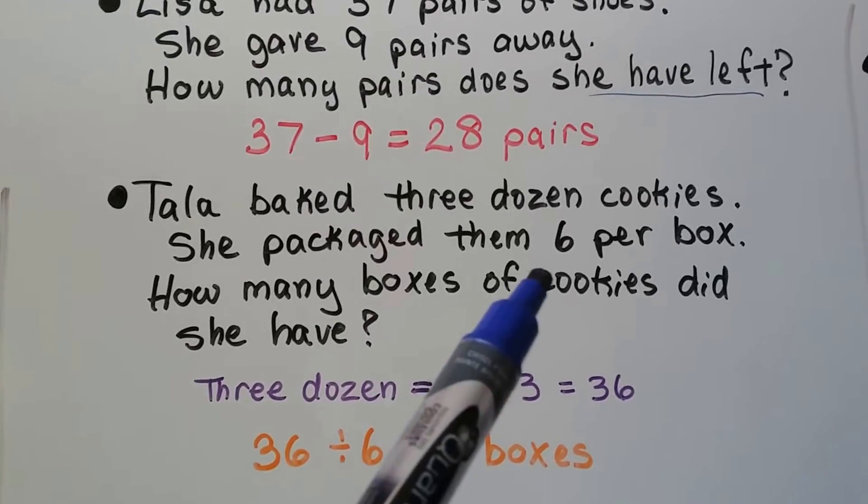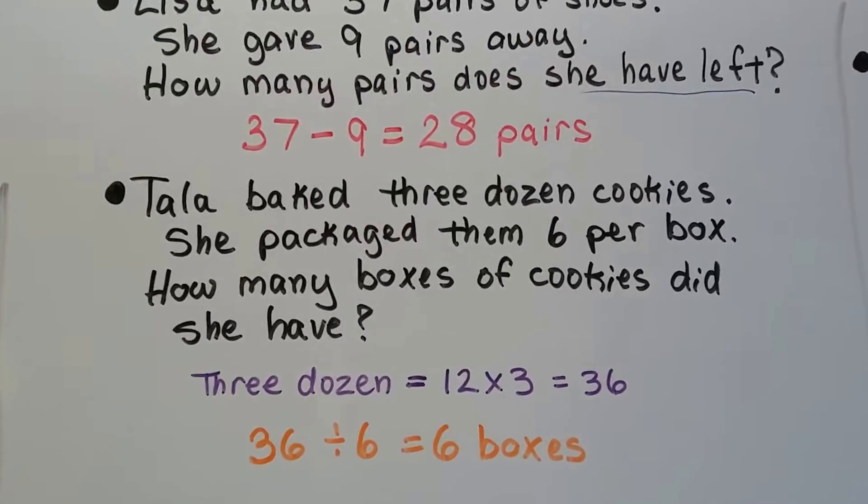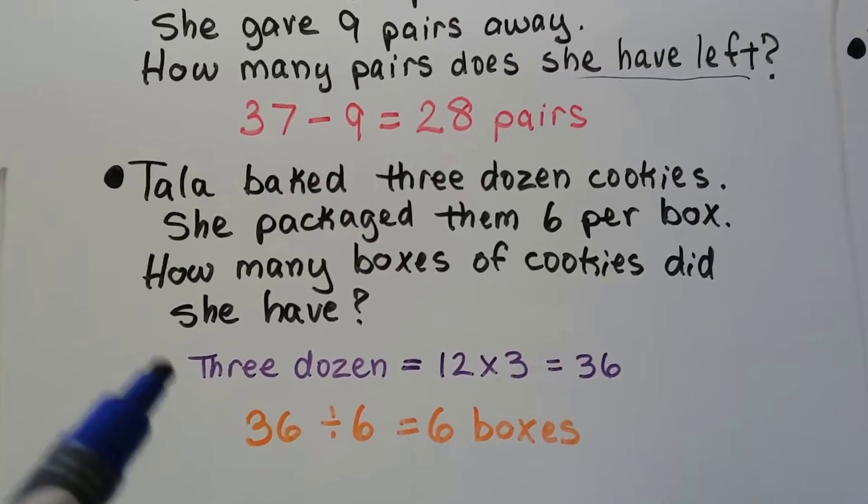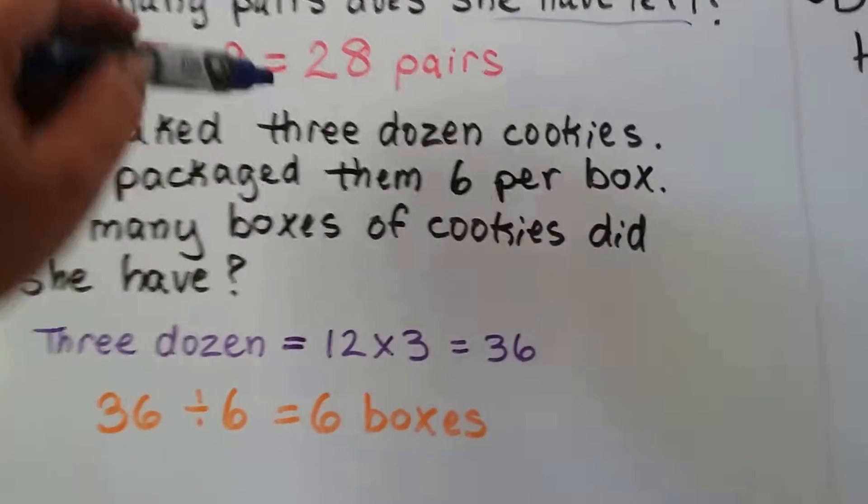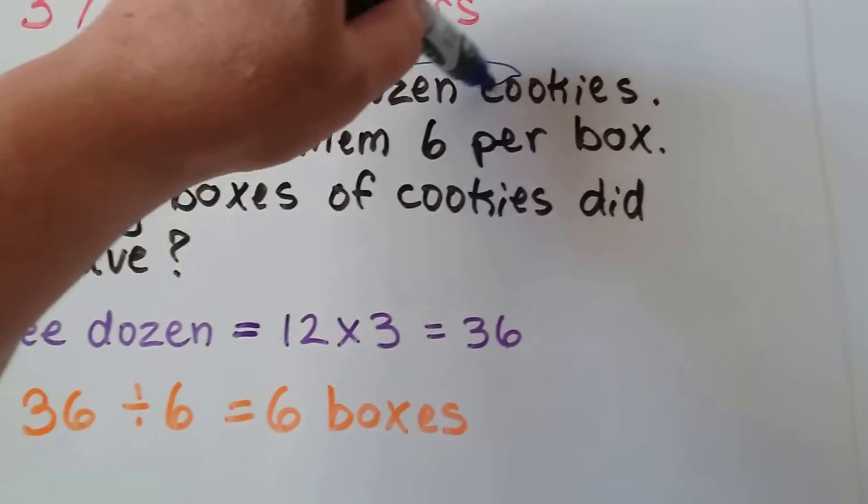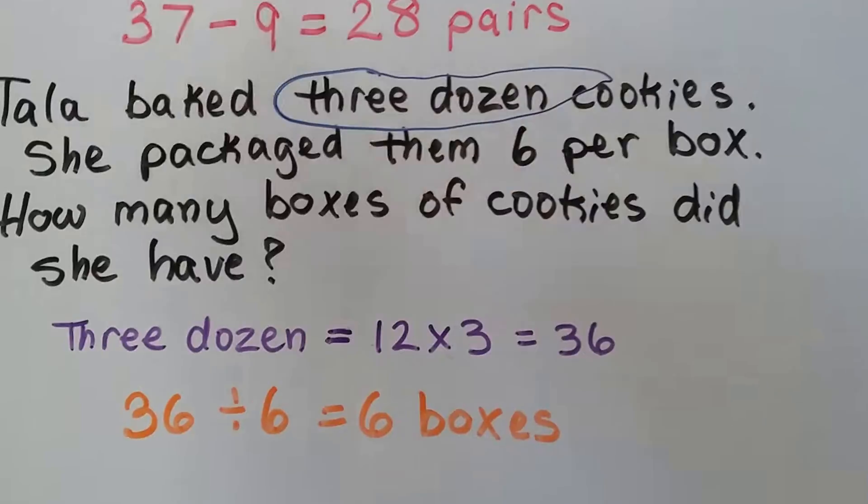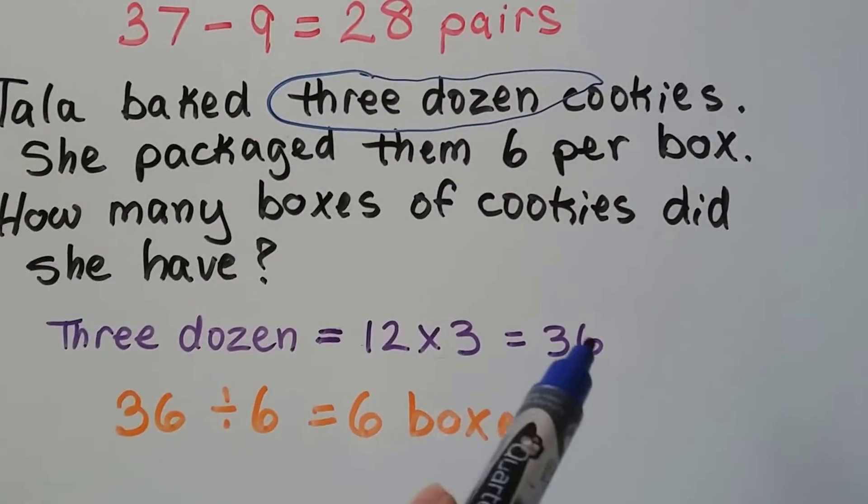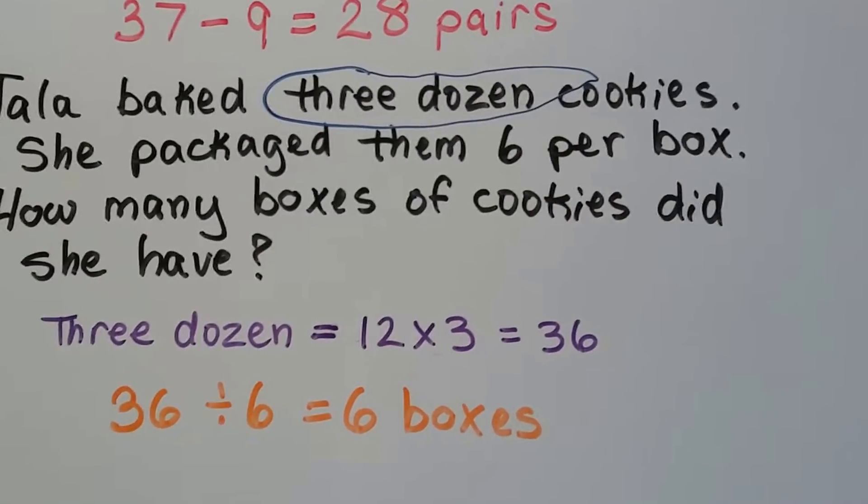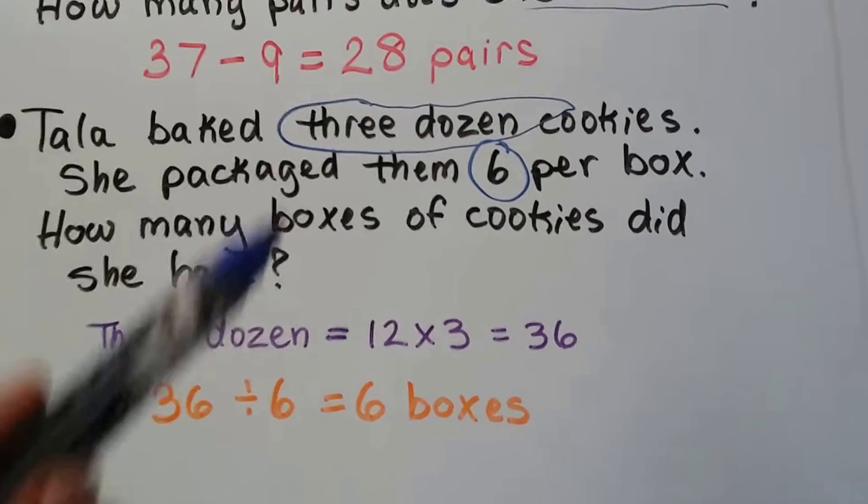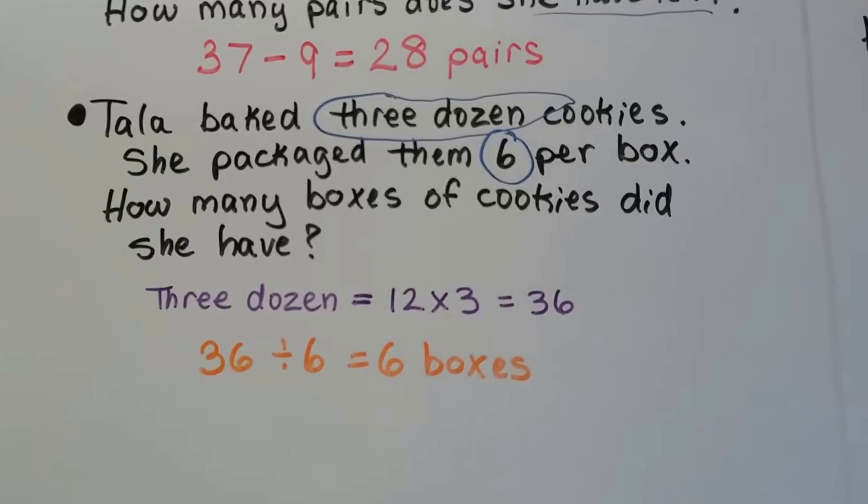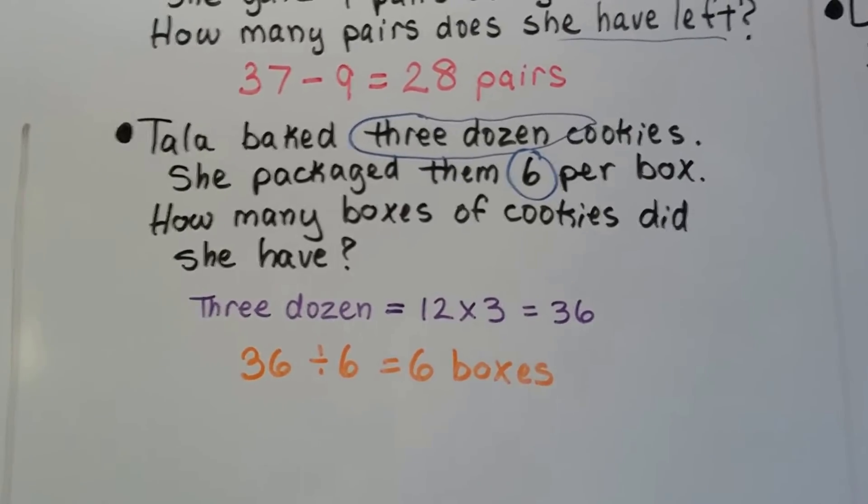We're not going to do six divided by three dozen. Keep your eyes peeled for word problems like this, where three dozen is actual information we need. It really means 36 and isn't written in number form. The only number you'll see is six per box, but keep in mind that three dozen means 3 times 12, which equals 36.